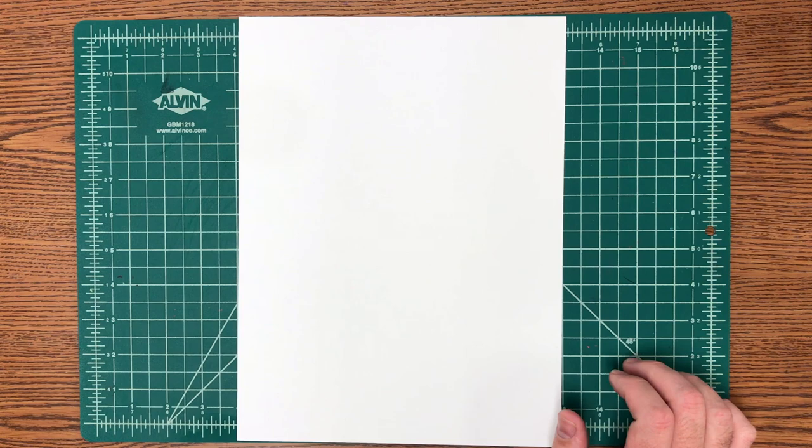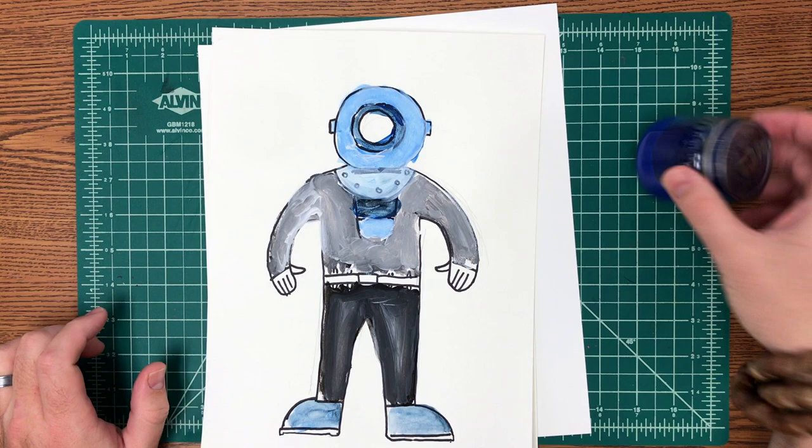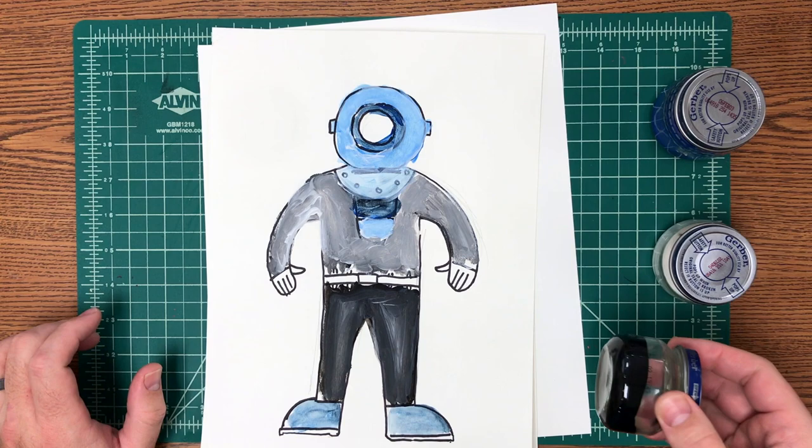Today we're going to draw this scuba man. We're going to start by drawing it and then we're going to paint it using tints and shades of blue. A tint is adding white to a color and a shade is adding black to a color.